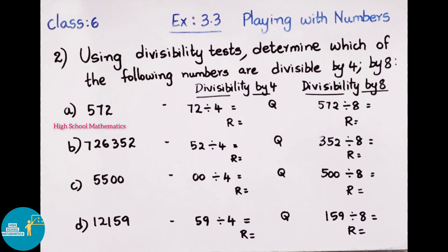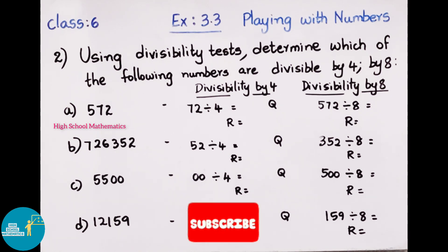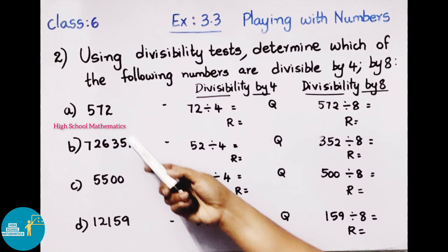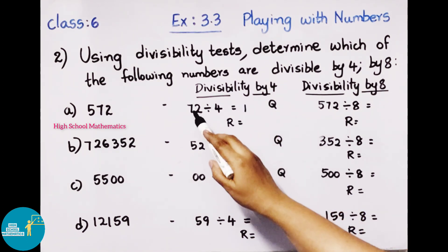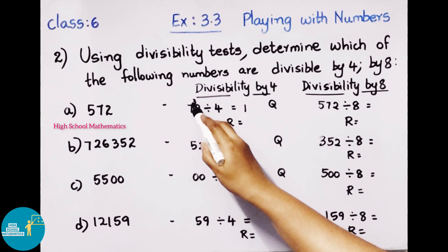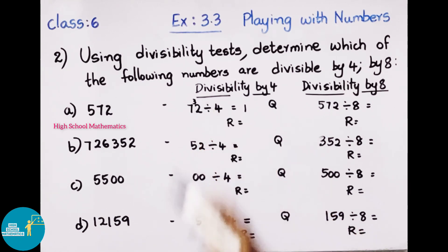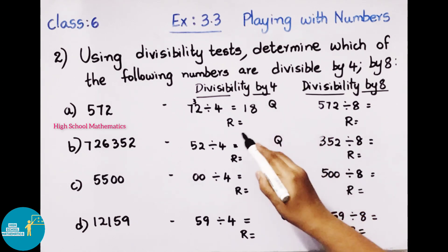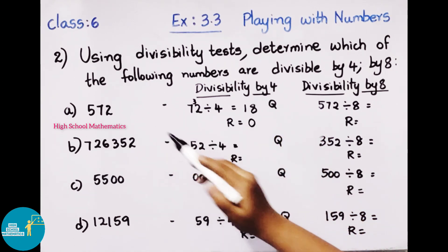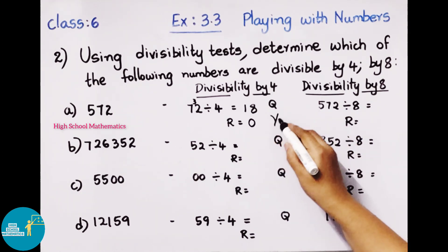Let's check if 572 is divisible by 4. A number is divisible by 4 if the last two digits are divisible by 4. The last two digits are 72. Dividing 72 by 4: 4 times 18 is 72, so the quotient is 18 and remainder is 0. Therefore, 572 is divisible by 4. Yes, it is divisible.